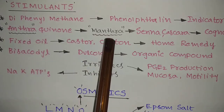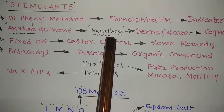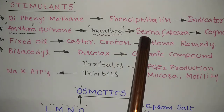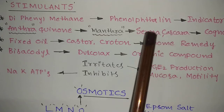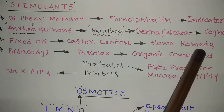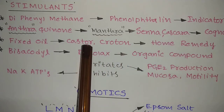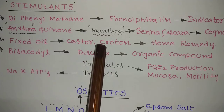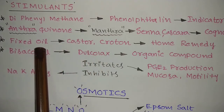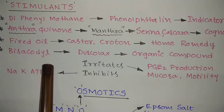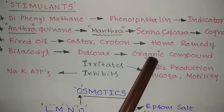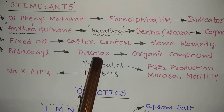Under pharmacognosy, the stimulant drugs contain anthraquinone glycosides — think of 'anthra' as a mantra for constipation. Example plants are senna and cascara (remember 'SC' like Supreme Court). For home remedies, castor oil and croton oil are widely used — both start with 'C' and come under the class of fixed oils. Bisacodyl is an organic compound stimulant with the popular brand name Dulcolax.